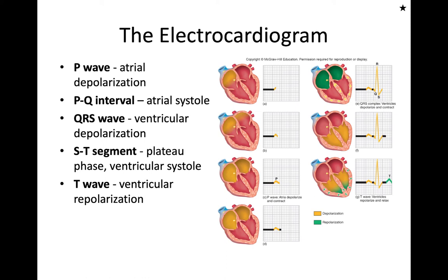We can see this piece by piece: atrial depolarization begins with the P wave, starting at the SA node, spreading to the right atria and then the left atria, producing the P wave blip. The electrical signal shown in yellow spreads to the different segments. Once the signal hits the AV node, we get an isoelectric line corresponding to the AV delay. The atria then repolarize, shown in green, during the QRS segment, but we can't see it because it's hidden within the QRS.